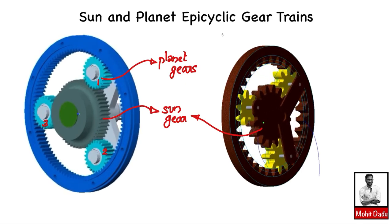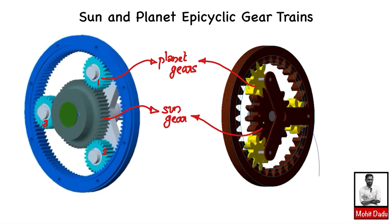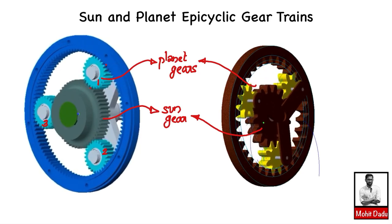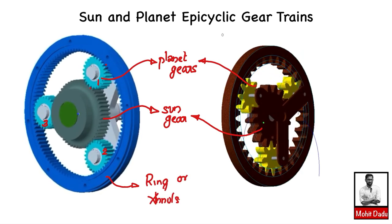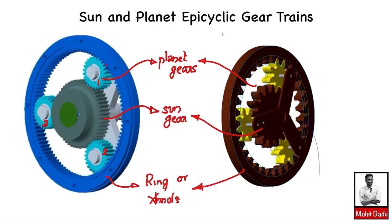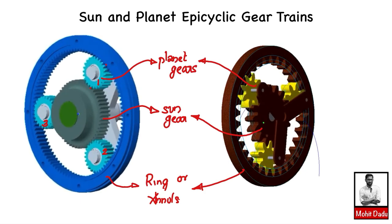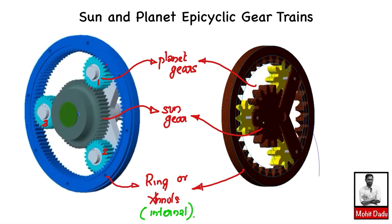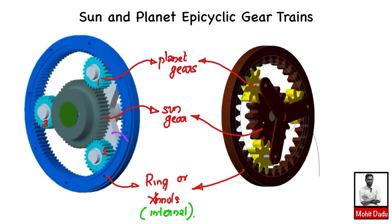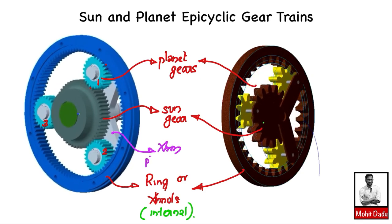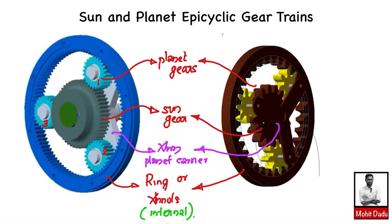Each of these planet gears has similar motion. The planet gears are shown in yellow, continuously moving. This planet gear meshes with the sun gear at one point, and at the other point it meshes with the blue colored gear known as the ring gear or annulus. In the right side it is shown in brown. The sun gear and planet gear have externally cut teeth, but the ring or annulus has internal teeth. All the planet gears are connected by an element called the arm, also known as the planet carrier.